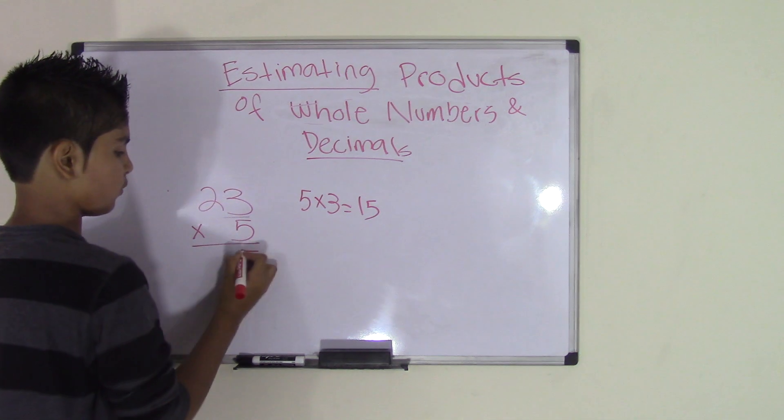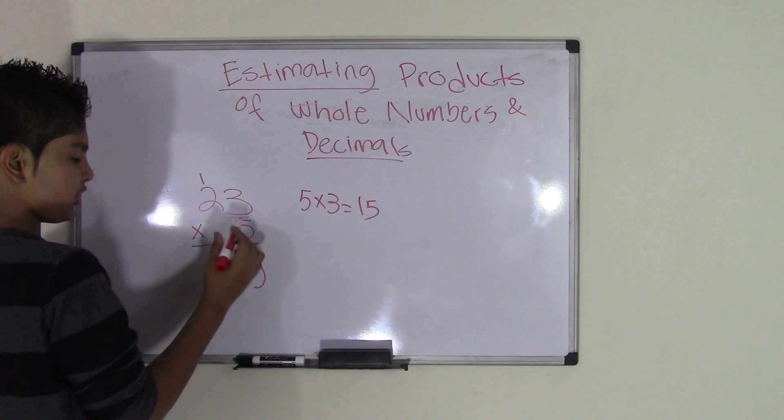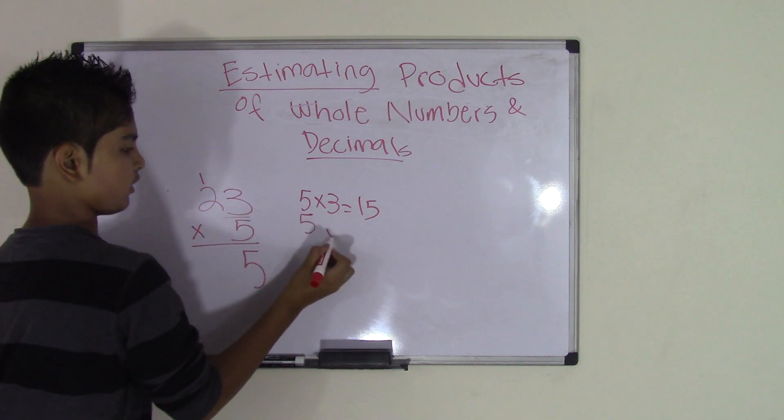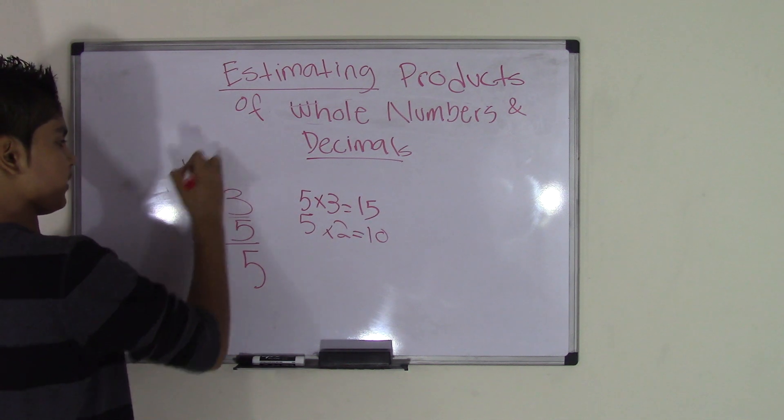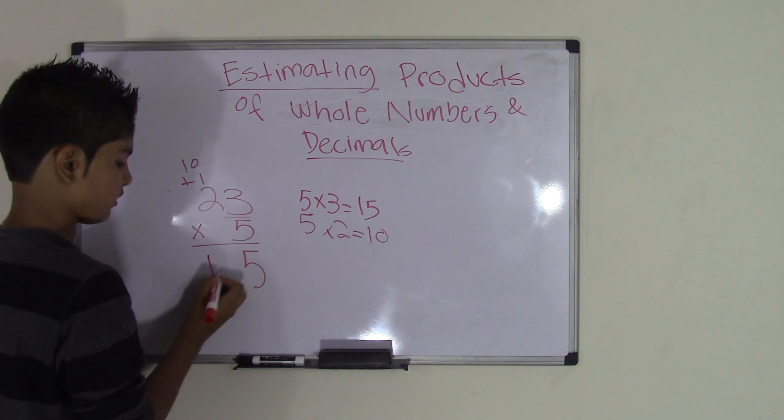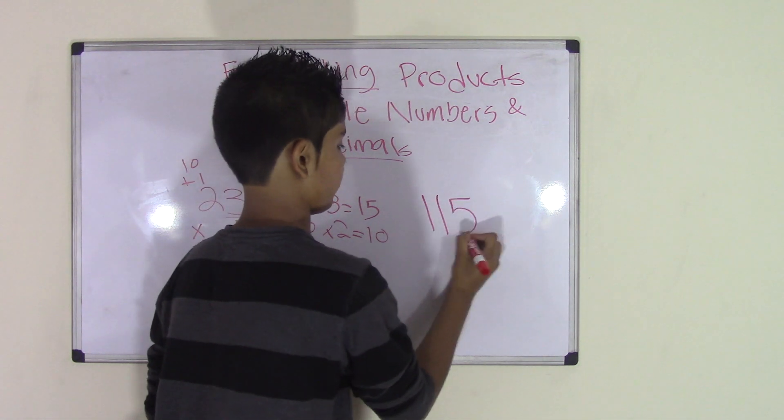So we put the 5 over here, bring the 1 around onto the 2, and now we do 5 times 2, and we know that 5 times 2 is 10. So, 10 plus that 1 is 11, and our final product will be 115.